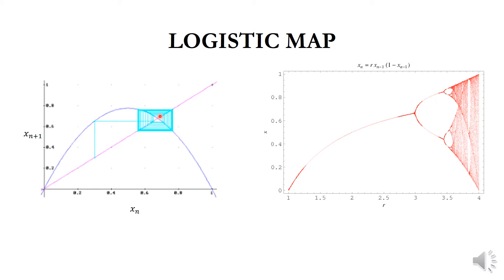For a particular value of r, the population converges to a fixed stability point — an attractive point. This attractive point depends on the value of the control parameter r. If r is between 1 and 3, there is one attractive point. If r increases beyond 3, the number of attractive points becomes 2 — the curve bifurcates.